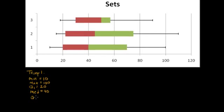And Q3 for troop one, that would have been with the end of the box here. So it looks like it's about between 60 and 80 or 70.